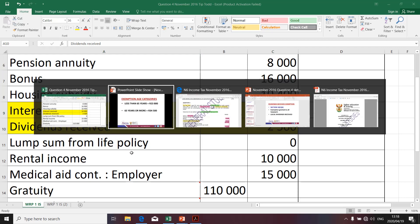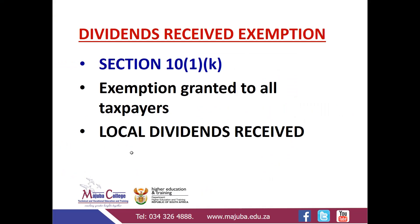Now let's go to dividends received. Dividends received is also exempt — it's exempt in terms of Section 10(1)(k) of the South African Income Tax Act. The exemption is granted to all taxpayers, that is, natural persons and juristic persons. So this is not age-driven because it is also granted to juristic persons. The exemption is only applicable to South African local dividends. This is a full exemption, as opposed to the interest received exemption which is a partial exemption because it has limits based on the age category of the taxpayer.